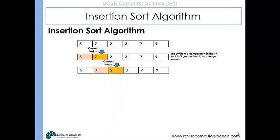We then move up and look at the next item, which is two. The two is compared to the seven, and because it is less than the seven, the two will come out and the seven will move up to fill its space.